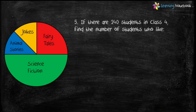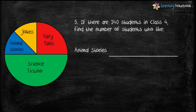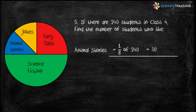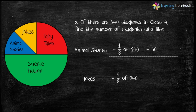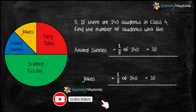Last question: if there are 240 students in class 4, find the number of students who like animal stories and jokes. Animal stories is represented by one-eighth of the circle, so number of students who like animal stories = 1/8 of 240 = 30. In the same way, jokes is also represented by one-eighth of the circle, so number of students who like jokes = 1/8 of 240 = 30.